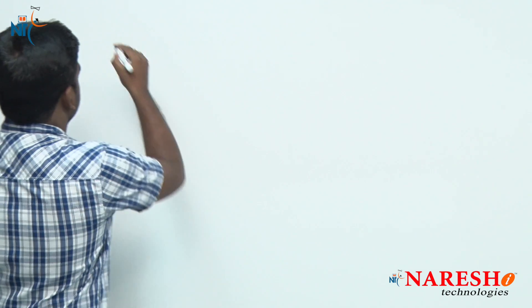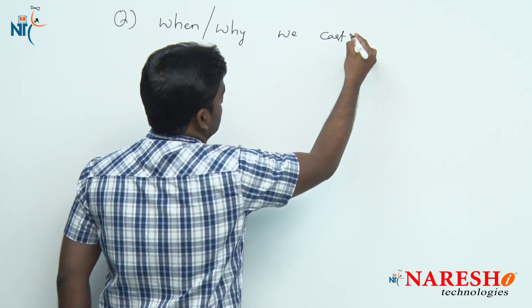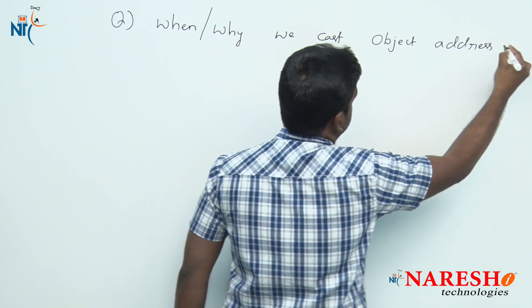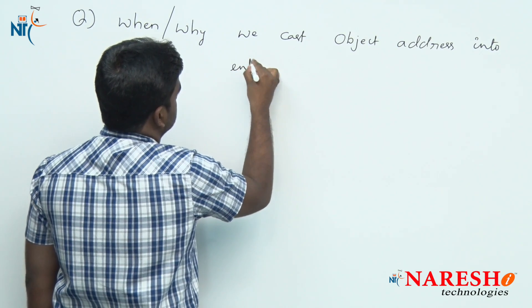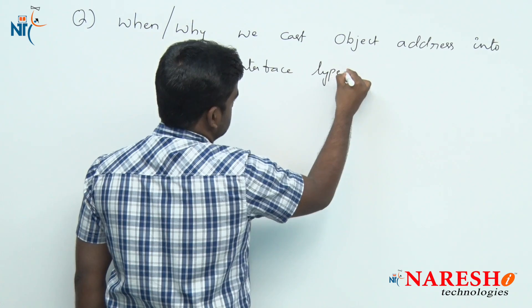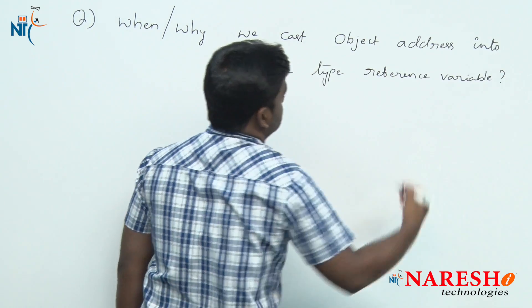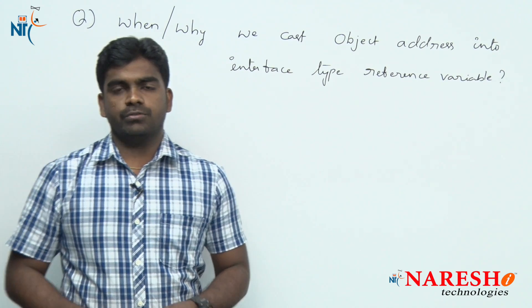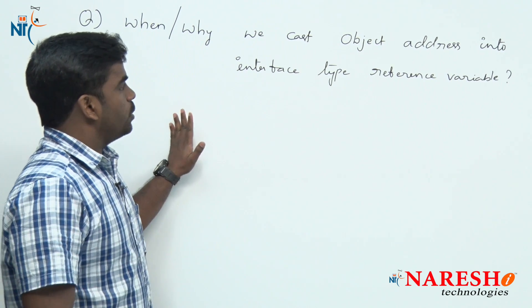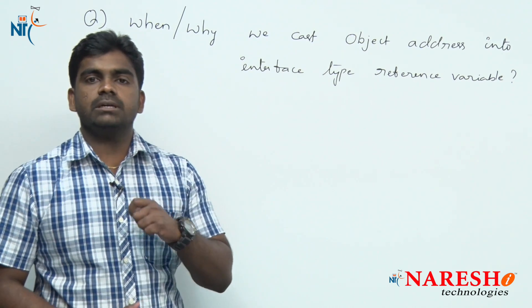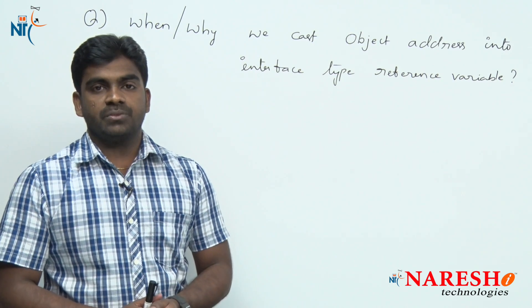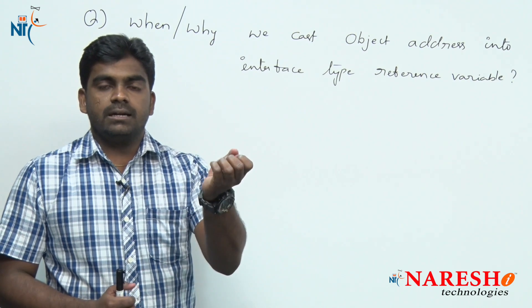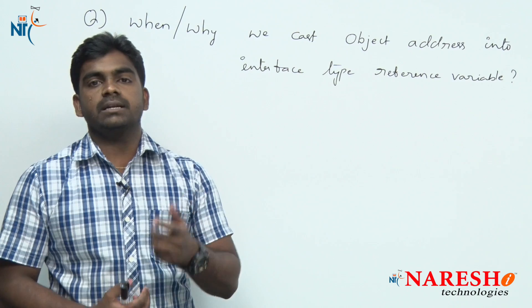Hi everyone, welcome to Nourish Technologies. This is Srinivas. In this session, we are going to discuss one very important question in Java interfaces: what happens when we cast an object address into an interface type reference variable? This is the most important and most doubtful question in runtime polymorphism. After creating the object for any class, why are we collecting that object address into an interface type variable? What are the reasons behind that?